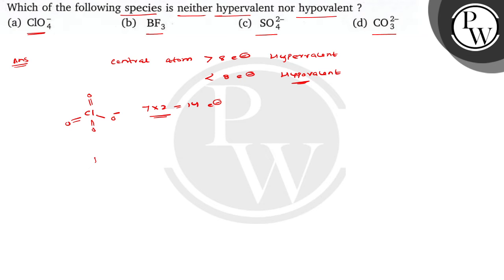In the case of boron trifluoride, this is the structure and the number of bond pairs around the central atom is 3, and therefore the number of electrons is 6. Therefore, it is hypovalent.